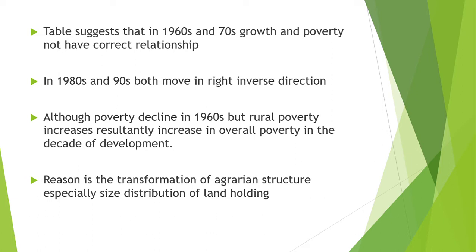We can say that the overall poverty level was increasing. The reason is the transformation of the agrarian structure — especially the size, distribution, and ownership of land. In the 1960s, the green revolution transformed the agricultural sector's structure. We took modernization and adopted new means of agriculture, which improved productivity. But when we adopted green revolution policies, we started using the latest technology — tractors and tube wells.